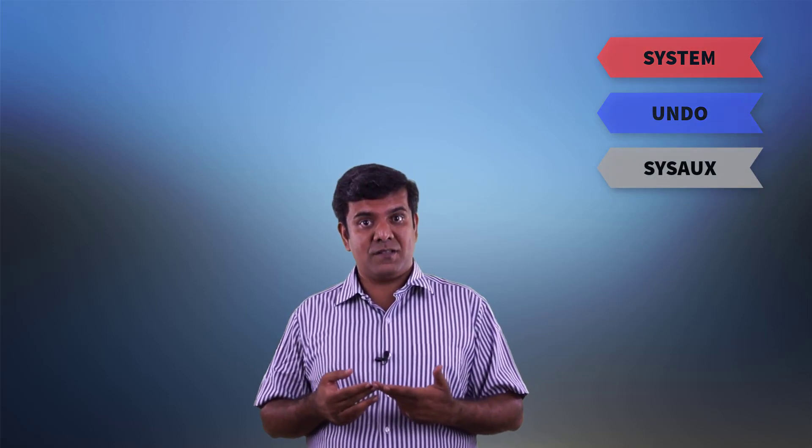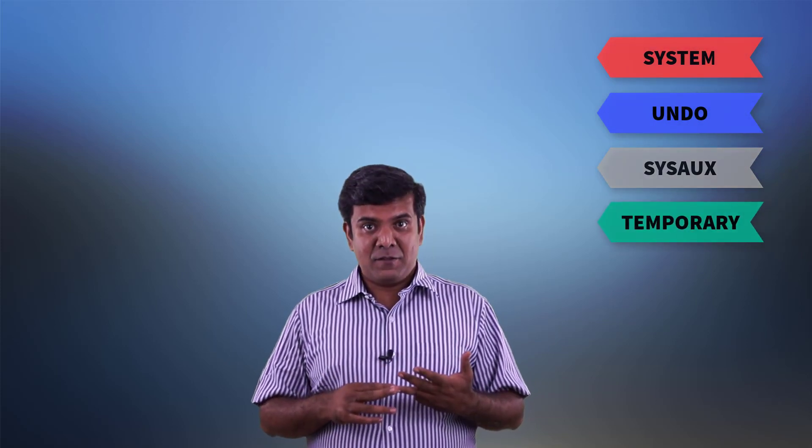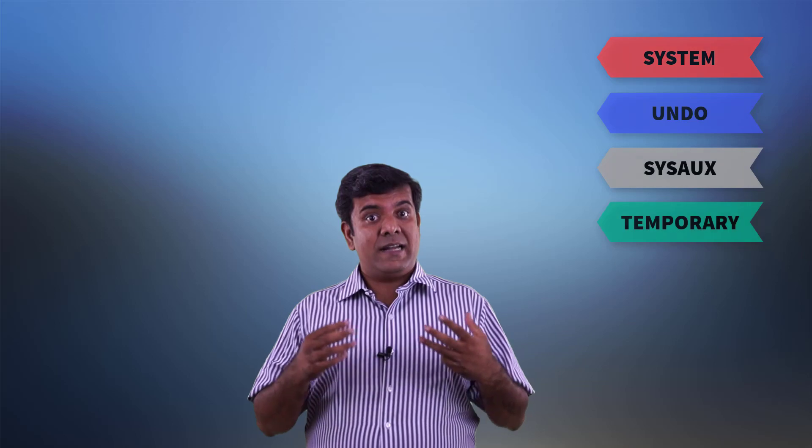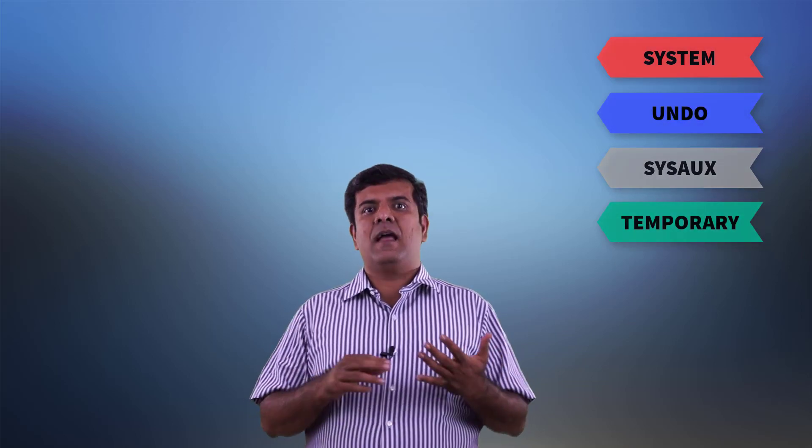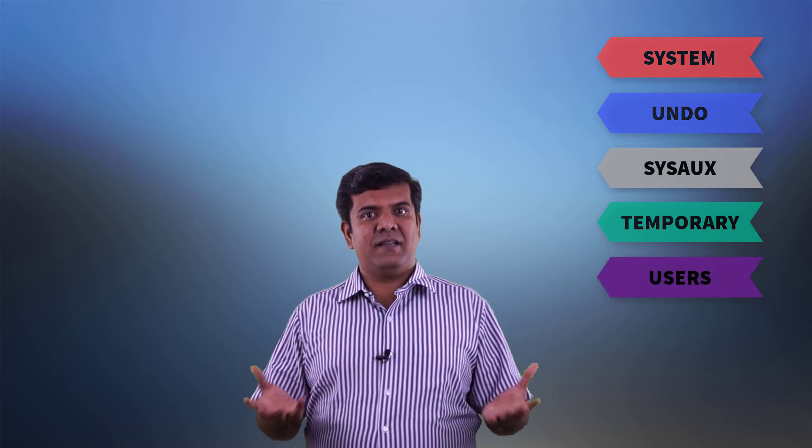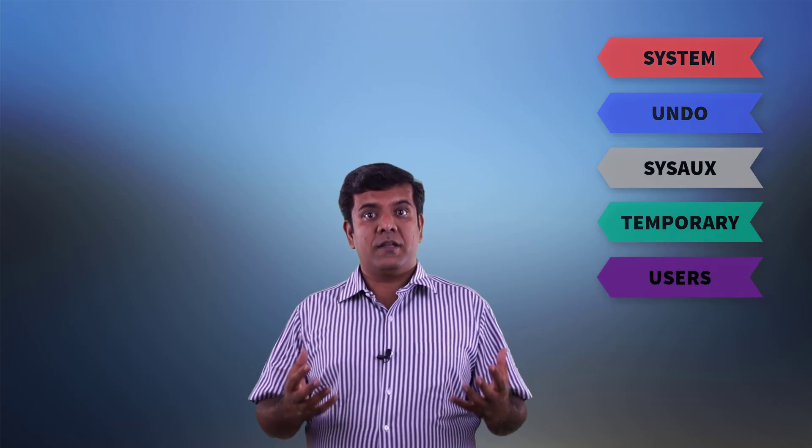To summarize, there are five types of tablespaces. Number one: system tablespace, which contains the code supplied with the database as well as the data dictionary. Number two: undo tablespace, which contains the old values of DMLs. Number three: SYSAUX tablespace, whose primary purpose is to keep performance data — otherwise called AWR or Automatic Workload Repository. Number four: temporary tablespaces for temporary operations and work areas. Number five: user data tablespaces or application tablespaces where you keep your application data.